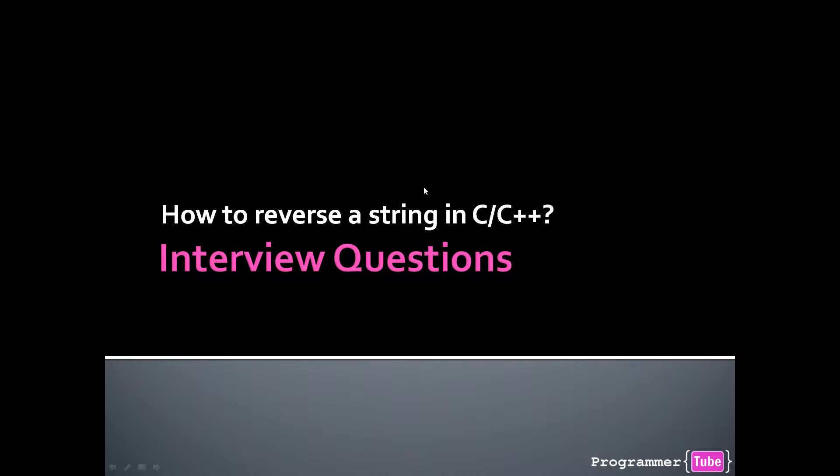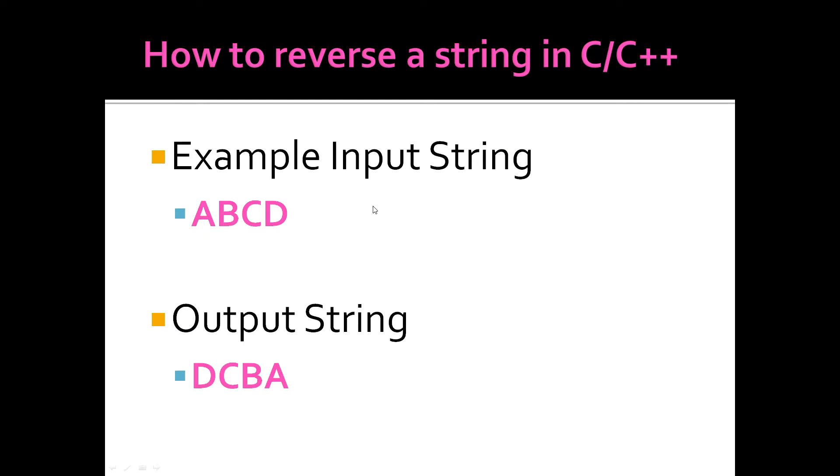And then before we start writing the code, I just want to go over my solution through some slides here and kind of explain to you the solution. So the first thing we want to see is an example, right? So here's an example input string ABCD. And the output string that the interviewer is expecting is that you reverse completely the string from left to right. So it becomes DCBA.